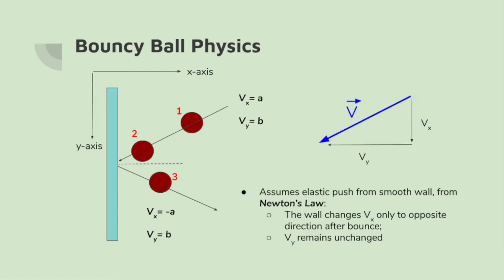Let me briefly explain how the bounce works. As shown in the diagram, when a ball is traveling in a 2D plane, its speed vector can be broken down into two variables: the x velocity and the y velocity. When the ball is hitting a wall — in this case the wall is vertical — the wall pushes the ball backwards along the x-axis only, assuming the wall is smooth. According to Newton's third law, the Vx, which is the x velocity, will become negative Vx.